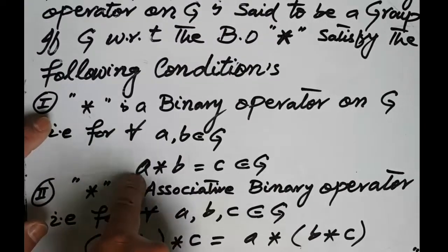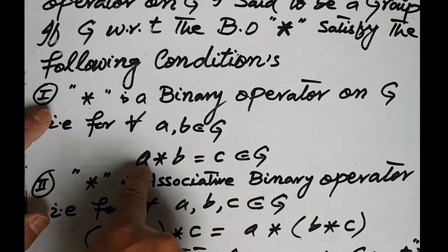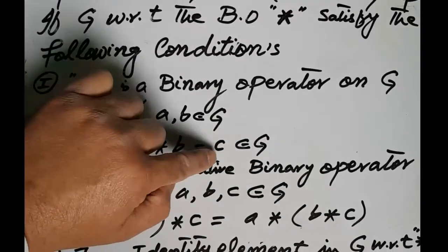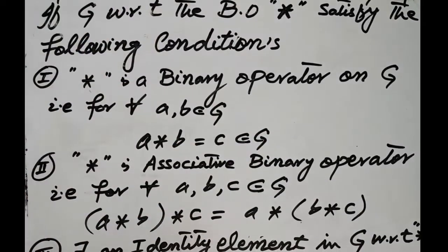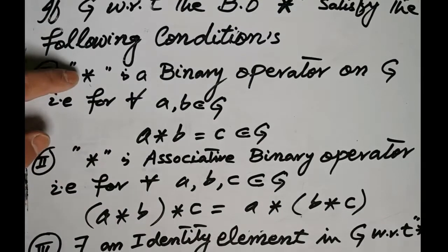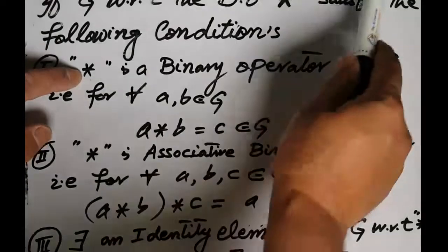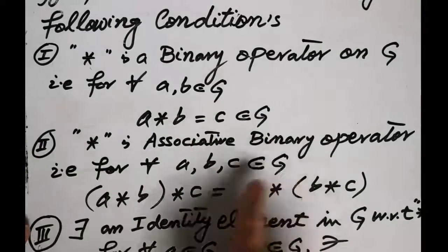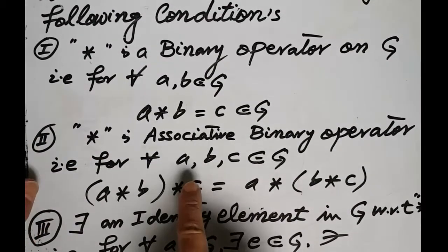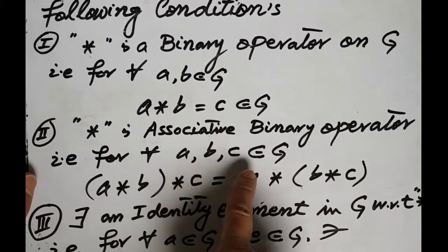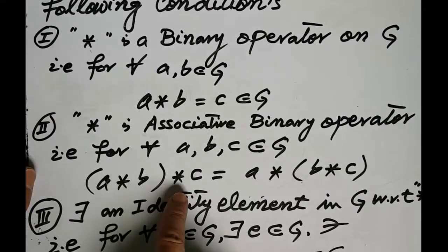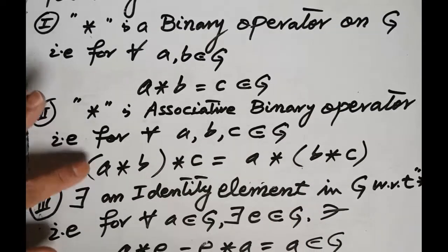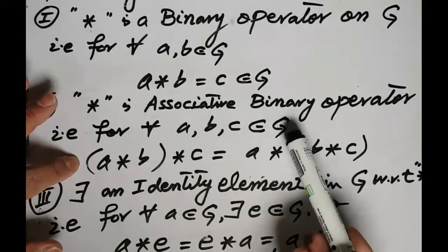When we operate element a with element b with respect to the binary operator star, the result must be contained in G. Thus star is called a binary operator, and star is an associative binary operator, that is, for each three elements a, b, c belonging to G: a star (b star c) is equal to (a star b) star c. That is, star is associative in the set G.